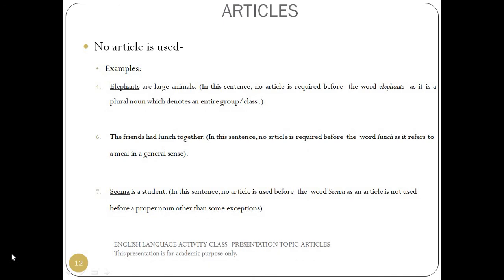No article is used — examples. 'Elephants are large animals.' No article is required before the word elephants as it is a plural noun which denotes an entire group or class. 'The friends had lunch together.' No article is required before the word lunch as it refers to a meal in a general sense. 'Sima is a student.' No article is used before the word Sima as an article is not used before a proper noun, other than some exceptions.